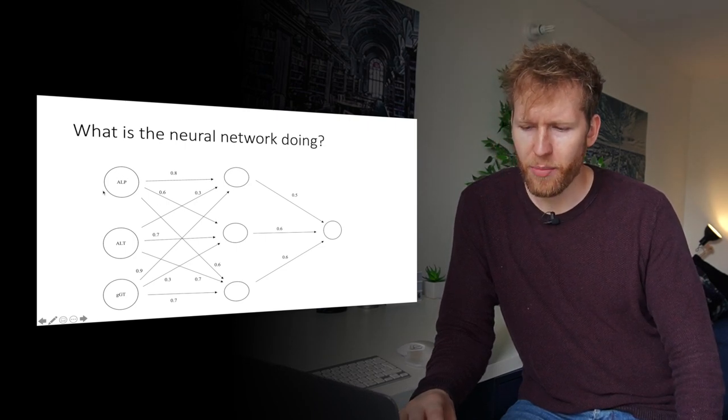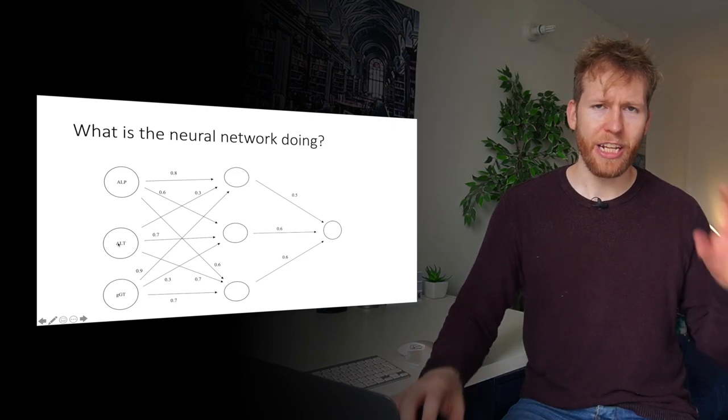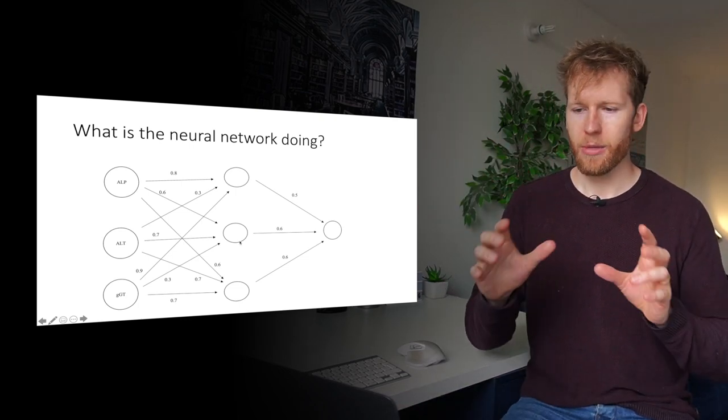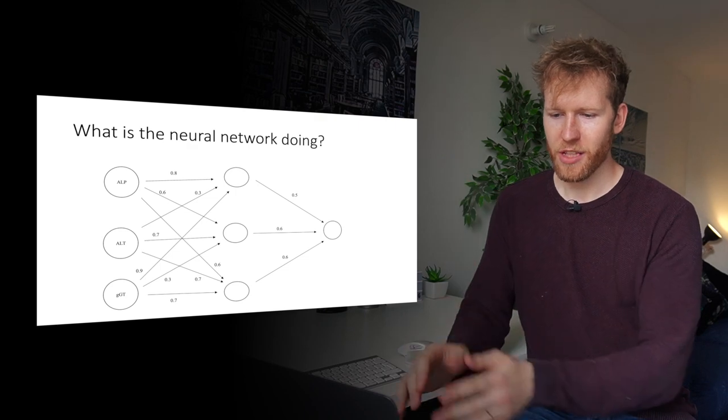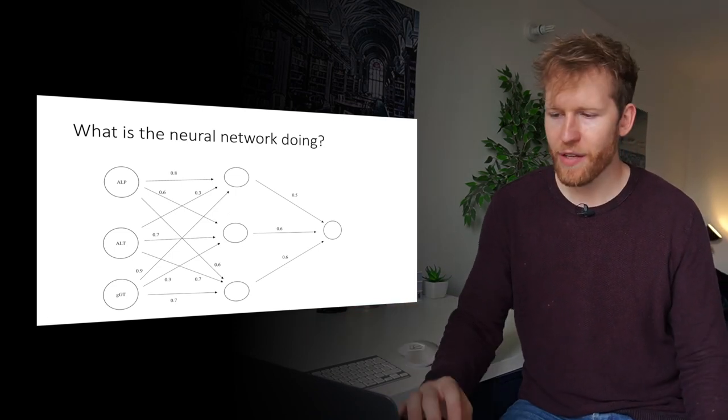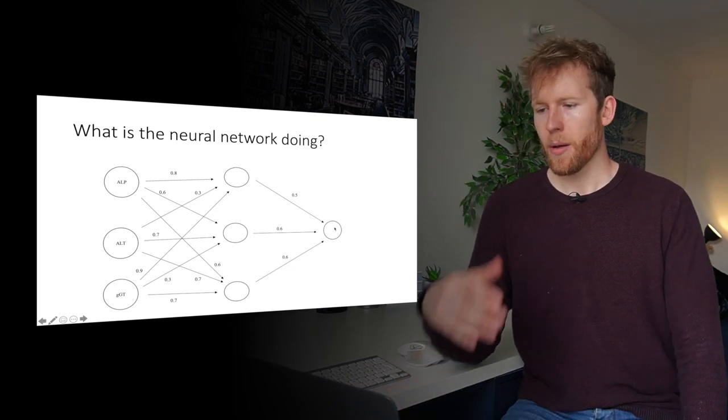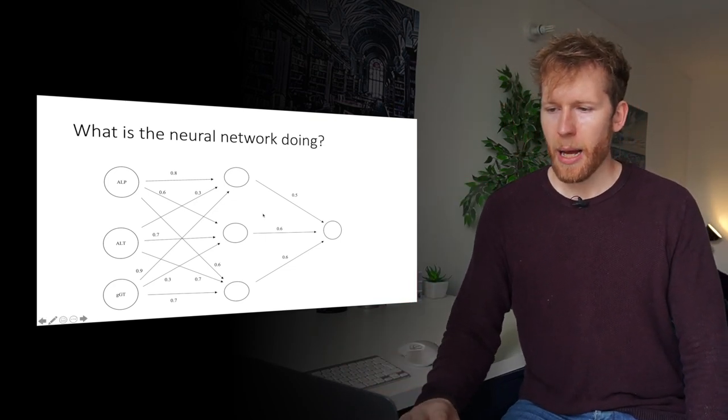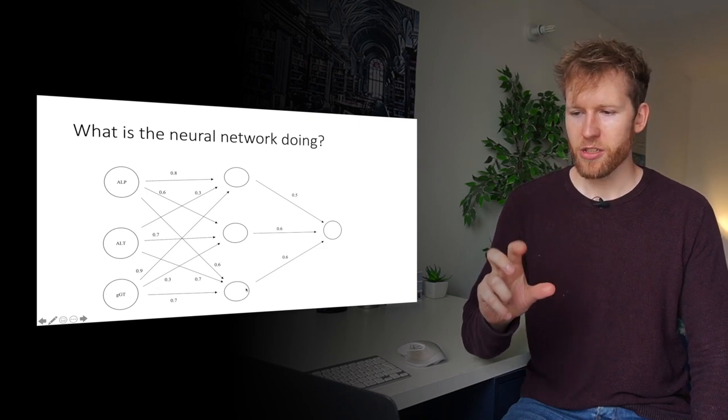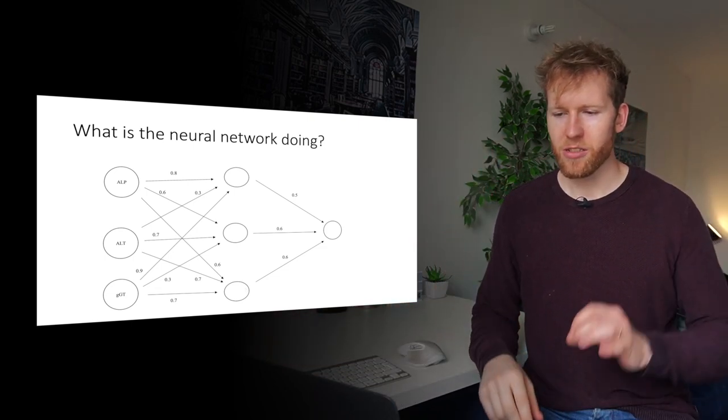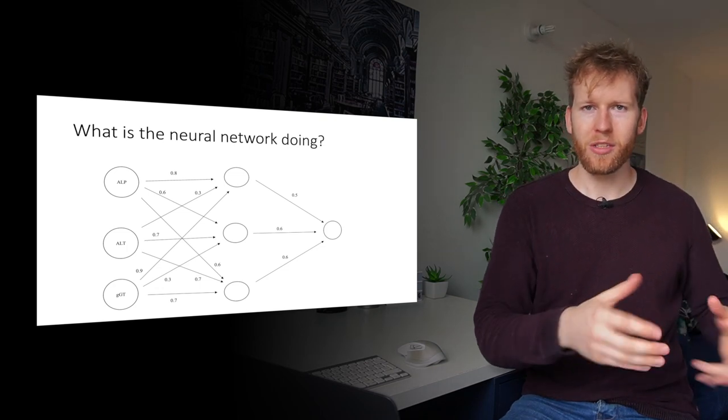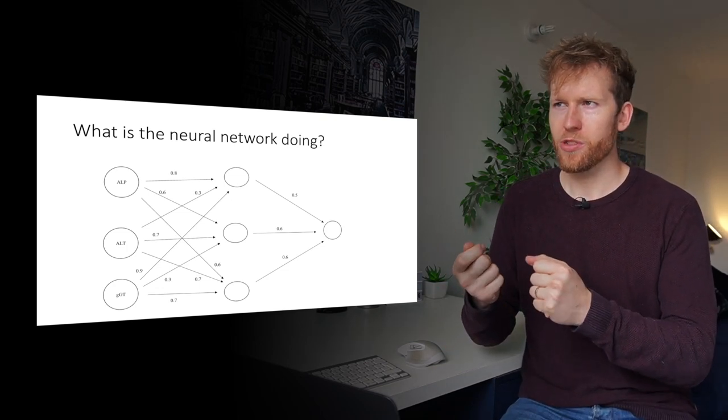Different nodes within this network are specialized for looking at different things. This first one takes a lot of weight from ALP and a lot of weight from gamma GT. So perhaps this neuron is good at distinguishing between whether or not you have bone disease or liver disease. The second one takes a lot of weighting from ALP and ALT. As many of you will be aware, ALT is an intra-hepatic enzyme, whereas ALP is post-hepatic. So perhaps this node is looking at what's the difference. Is this a disease in the liver or after the liver? And this final one seems to be taking an even spread of all of them. So this might just be a general metric of is there a certain level of liver damage? And then all of those can be combined into the final output.